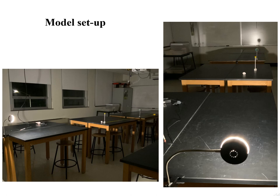Next, I tried lining up the Sun, Moon, and Earth all in a straight line. I had to adjust the positions of the Earth and Moon models and also adjust the clip light up and down to get everything to line up exactly.